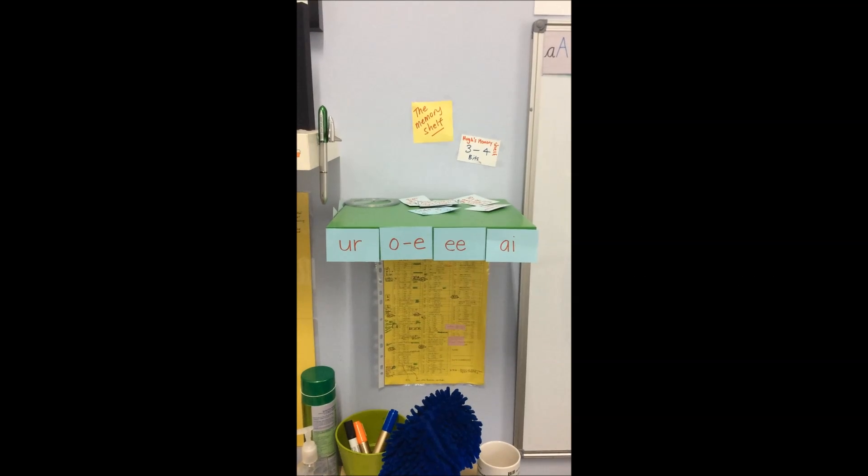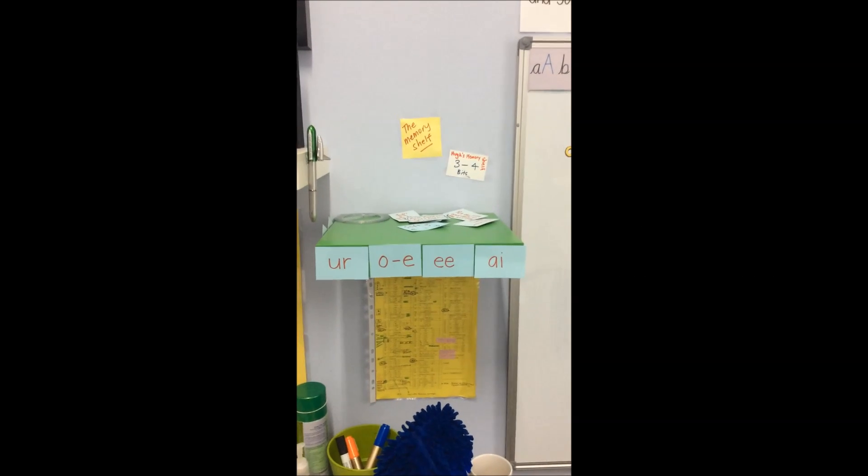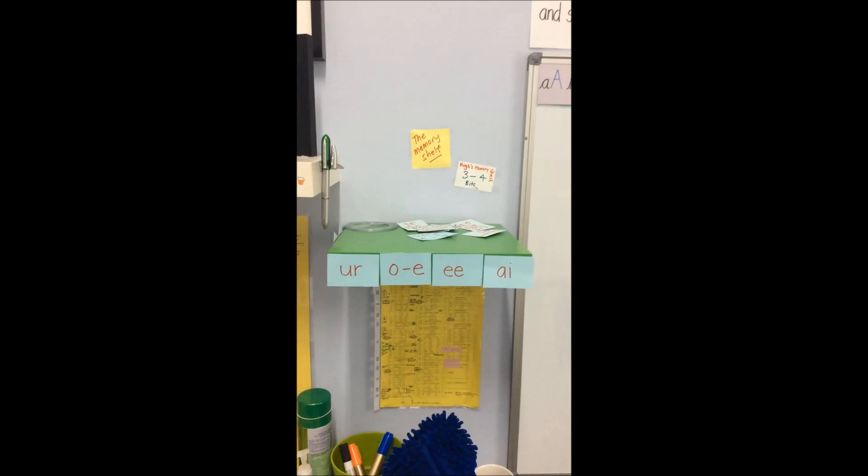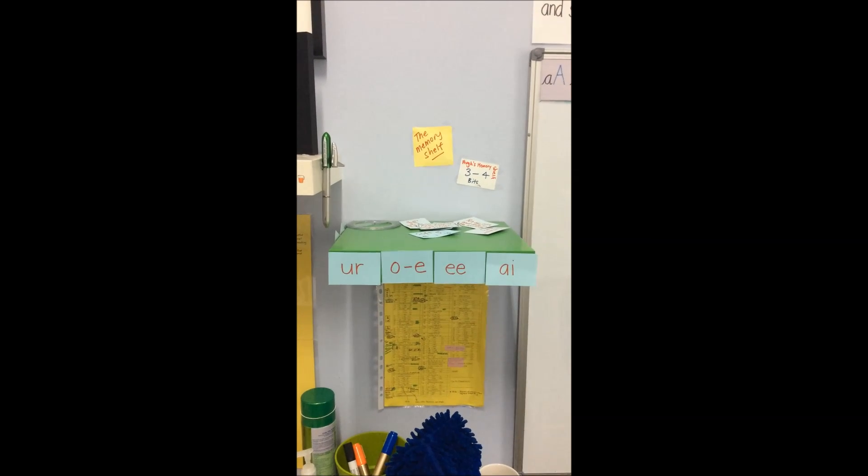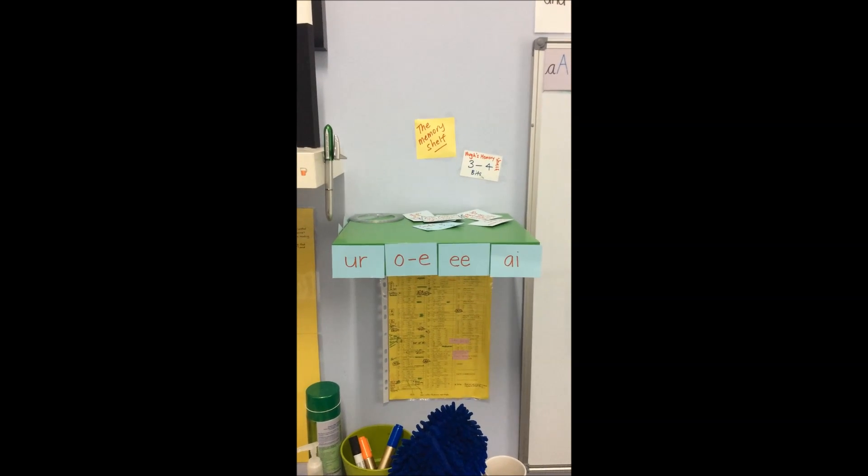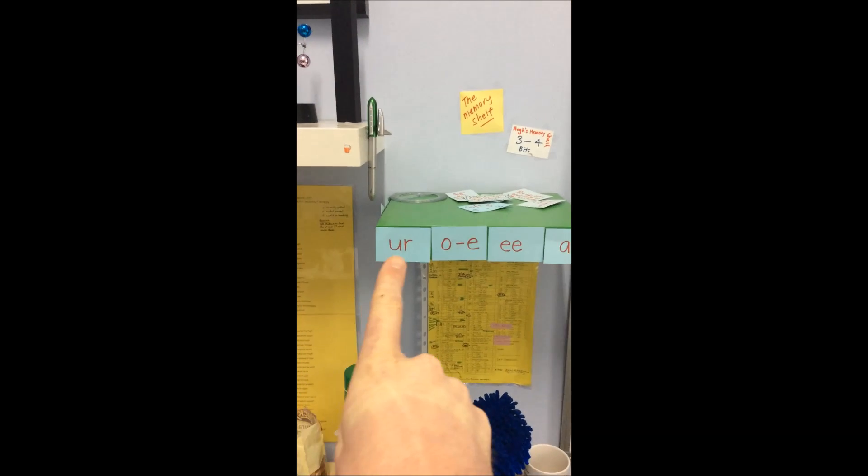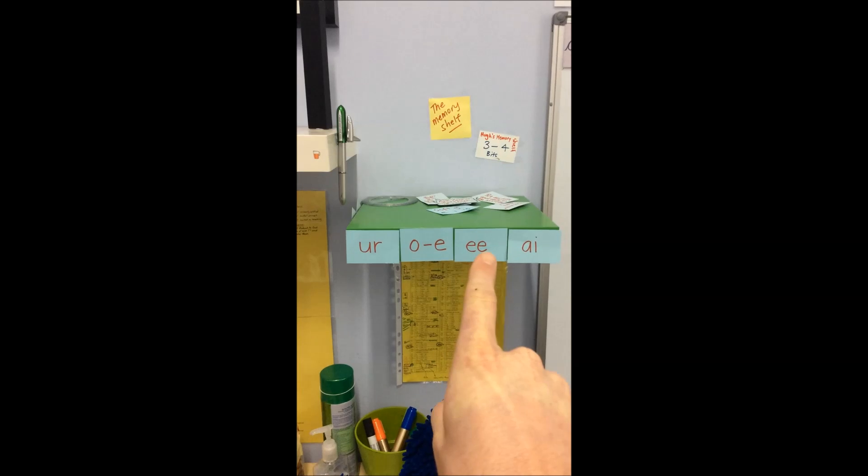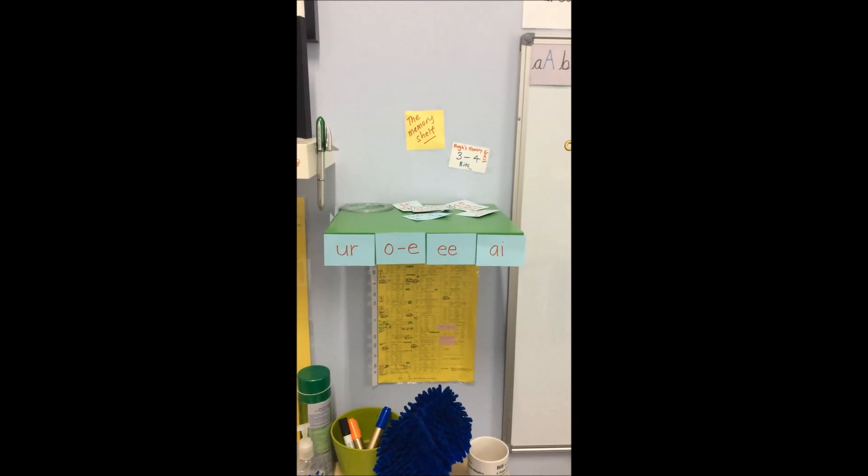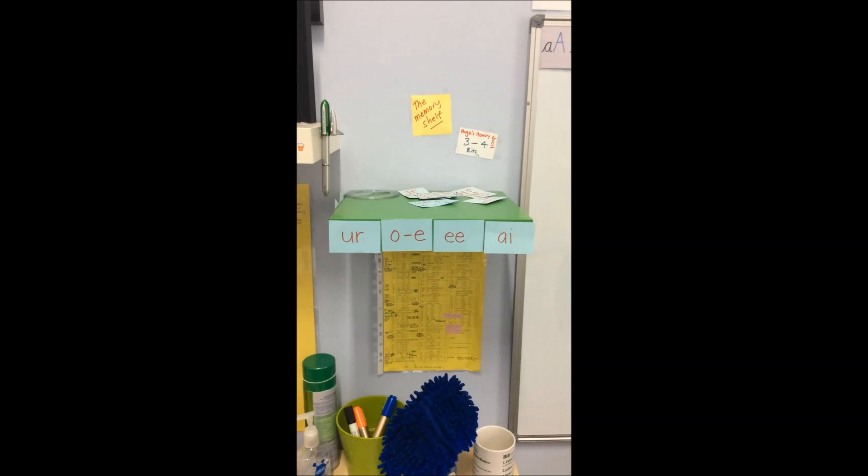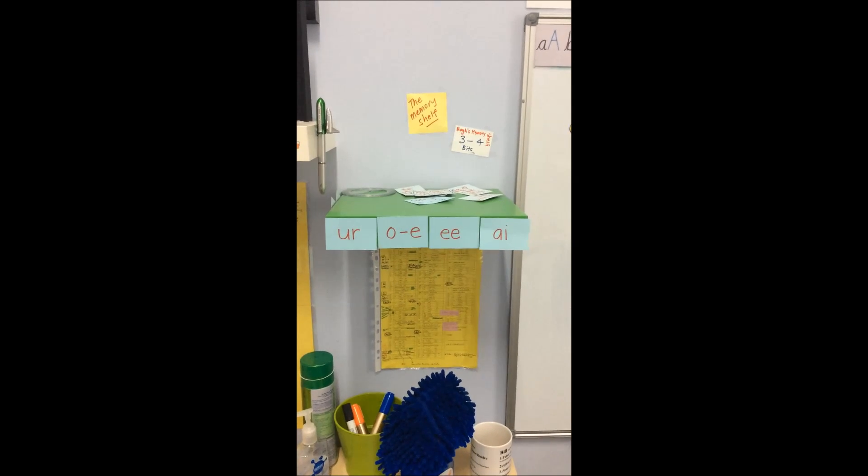This was called Hugh's memory shelf because the idea was first dealt with with a young person called Hugh, and you can see that this has three to four bits. If you have a look along the front of our memory shelf, we've got one, two, three, four positions that cards can sit on, and each of those positions represents a space or a slot in working memory.